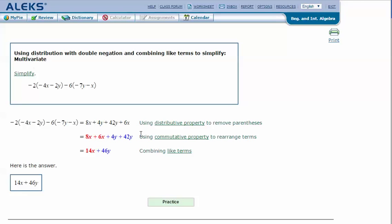So we can use the commutative property to rearrange them so we have our x's together and our y's together, and then we can compute. So we have 8x plus 6x is 14x, and 4y plus 42y, so 4 plus 42 is 46y. And that's our final answer because we can't simplify any further: 14x plus 46y.